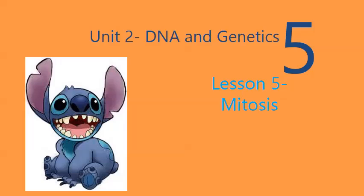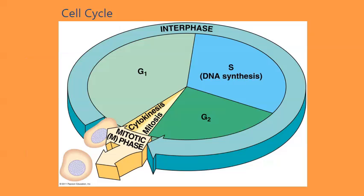Hello all and welcome to Lesson 5 of our Unit 2 DNA and Genetics Unit. You're probably wondering what happened to video 2-4, since we just took a quiz on sections 2-1 through 2-3 and now we're in 2-5. Well, 2-4 was originally going to be all about the cell cycle, but I decided that since the cell cycle is kind of just an intro to mitosis, I would go ahead and lump the two together. So cell cycle is what 2-4 was going to be, and now we're really just talking about 2-5, or mitosis.